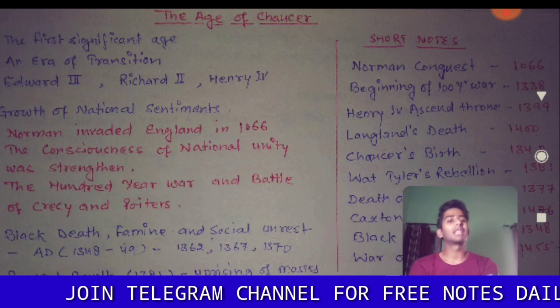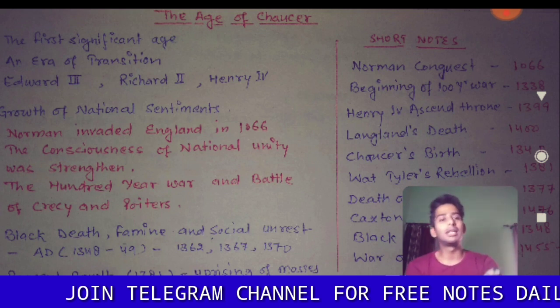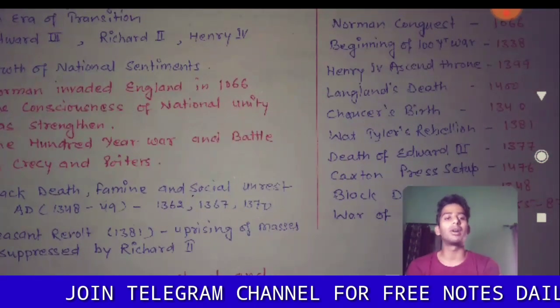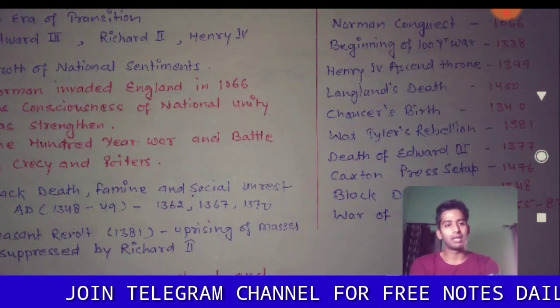Next is the Peasant Revolt. The Peasant Revolt happened in 1381. It was an uprising of the masses, and this uprising was suppressed by Richard II.